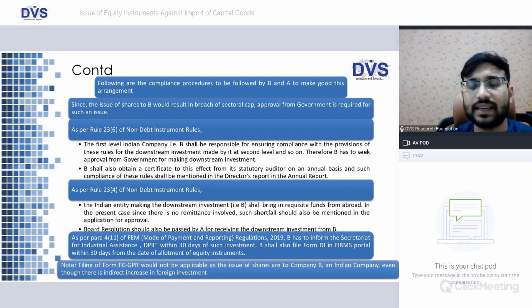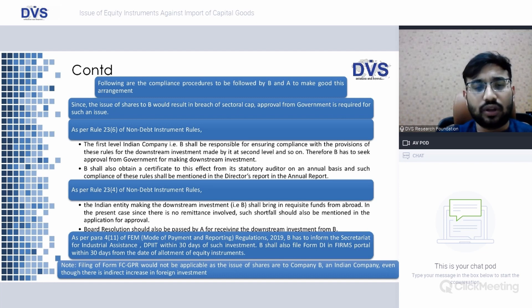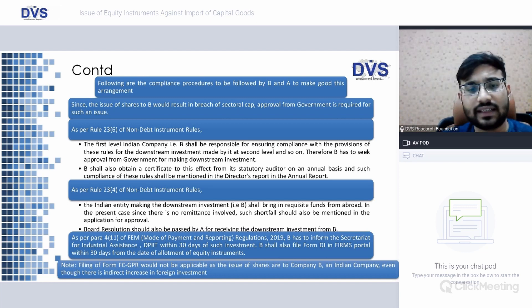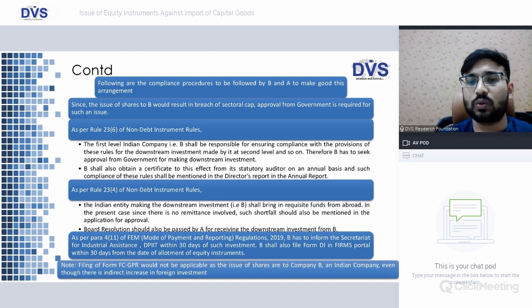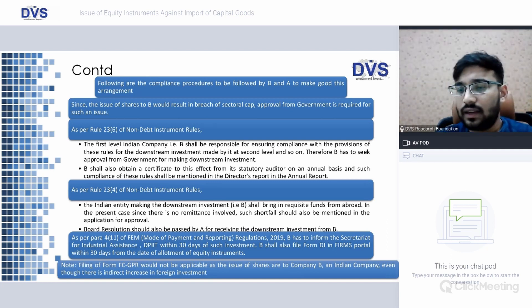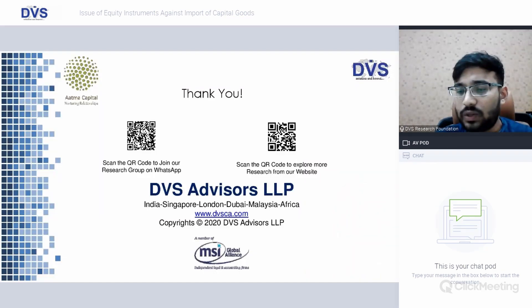These were a few case studies and some thoughts on the practical aspects of what happens when issue of shares is being contemplated against import of capital goods. We made it more interesting with practical case studies to show how this generally works from a FEMA perspective. Any questions — happy to answer, friends.